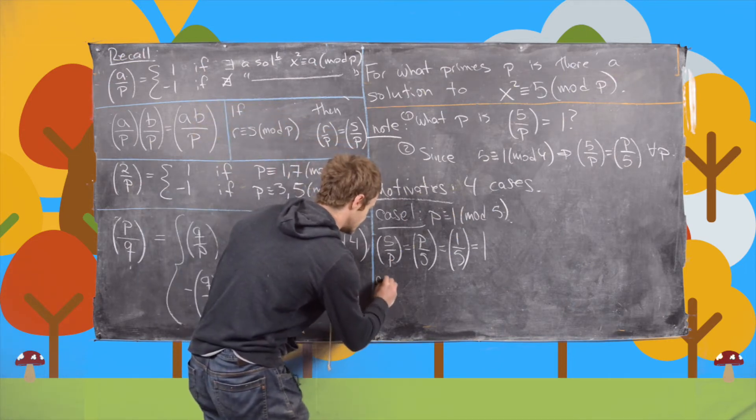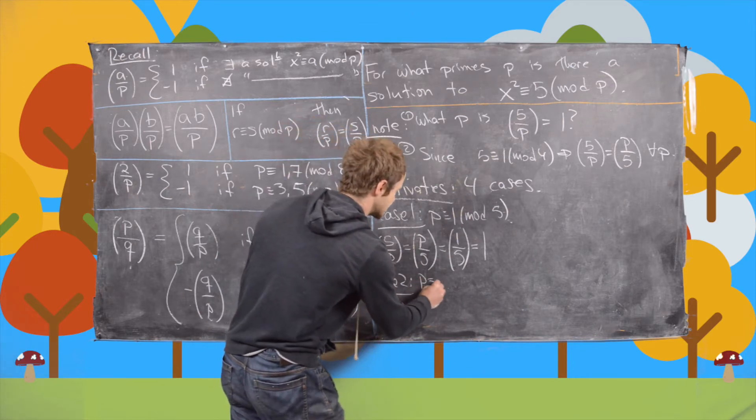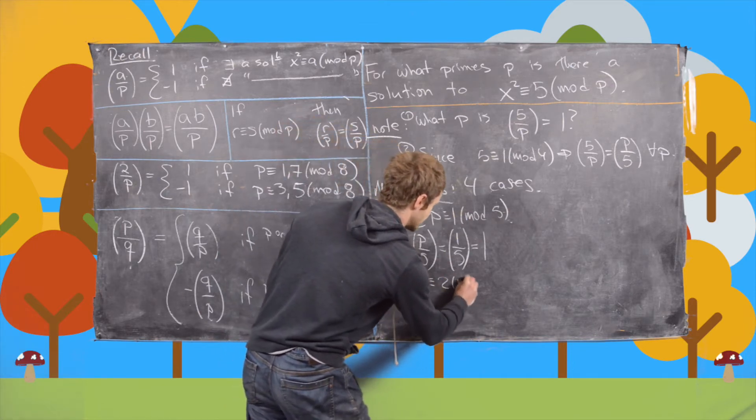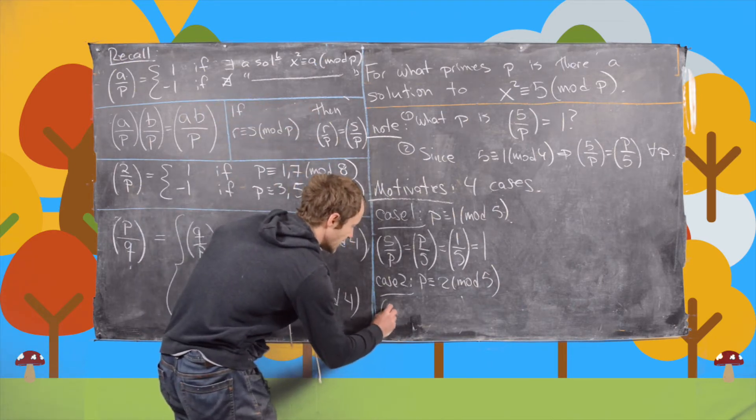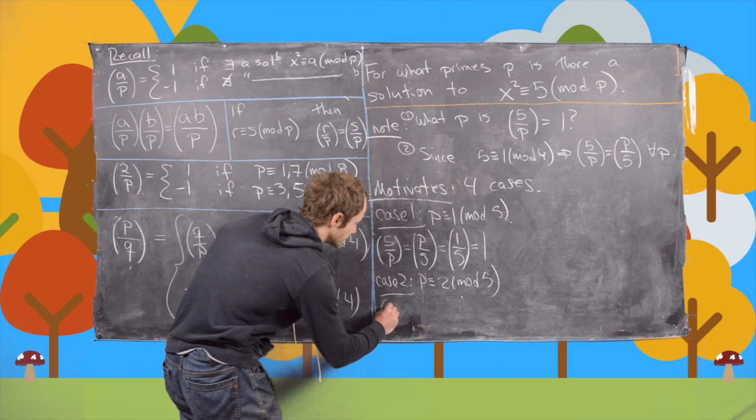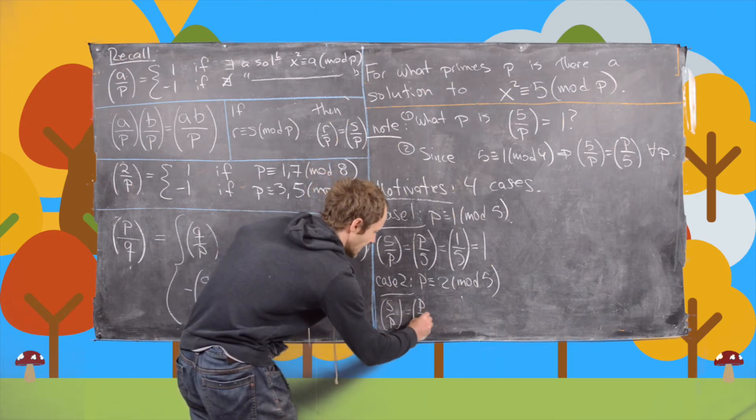So now let's look at case 2. We have p is congruent to 2 mod 5. So now for the second case, we have 5 by p is the same thing as p by 5.